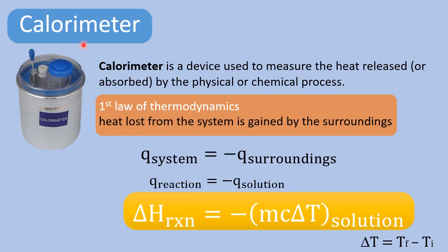The calorimeter is a device used to measure the heat released or absorbed by a physical or chemical process. Using the first law of thermodynamics, heat transfers between the system and surroundings — if heat is lost from the system, it must be gained by the surroundings. We can create a mathematical relationship between the heat of the system and heat of the surroundings; the quantity of heat must be the same, only the direction is opposite.